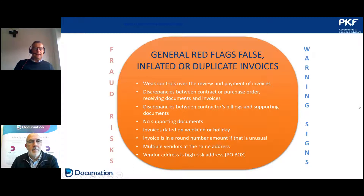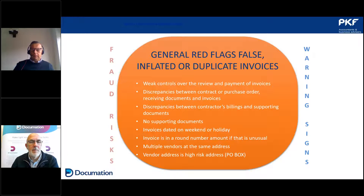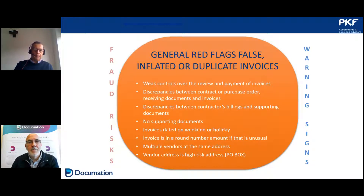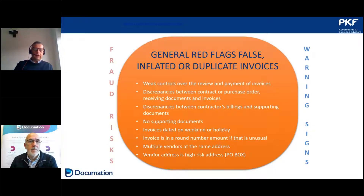Once you've identified the risks and your controls, you look at mitigating the risks you have no controls around — and all of a sudden you've built a picture. Here's a general overview of red flags around false, inflated, duplicate, and aggregated invoices. Don't forget staff — the insider threat is your biggest threat. Allowing staff autonomy unfortunately increases risks. As we move into the second phase of COVID and lockdown, think about the risks from that person working at home and what controls you have.